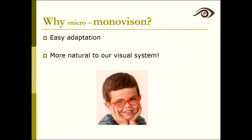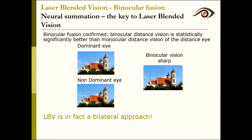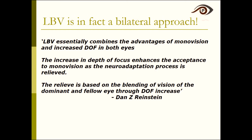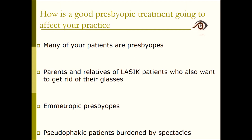We chose micro-monovision because — as seen in children with amblyopia — the brain tends to suppress blur from one eye very fast. Laser blended vision is a bilateral treatment; you always treat both eyes. Binocular vision is always sharper than monocular. In all my case studies, 97% of patients achieved this, with absolutely no cross-blur. Even if a patient asks for one-eye treatment, I tend to treat both eyes together.